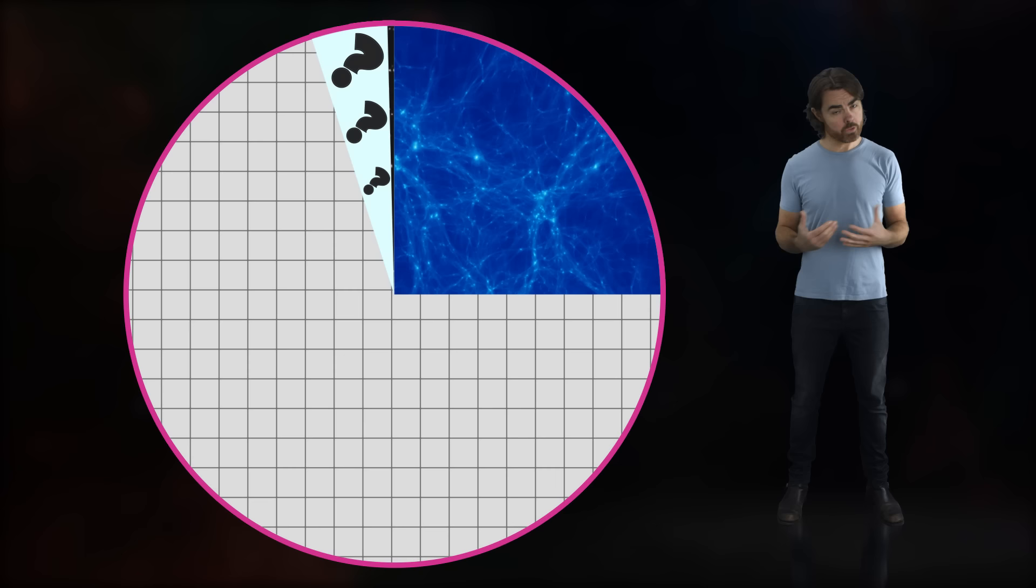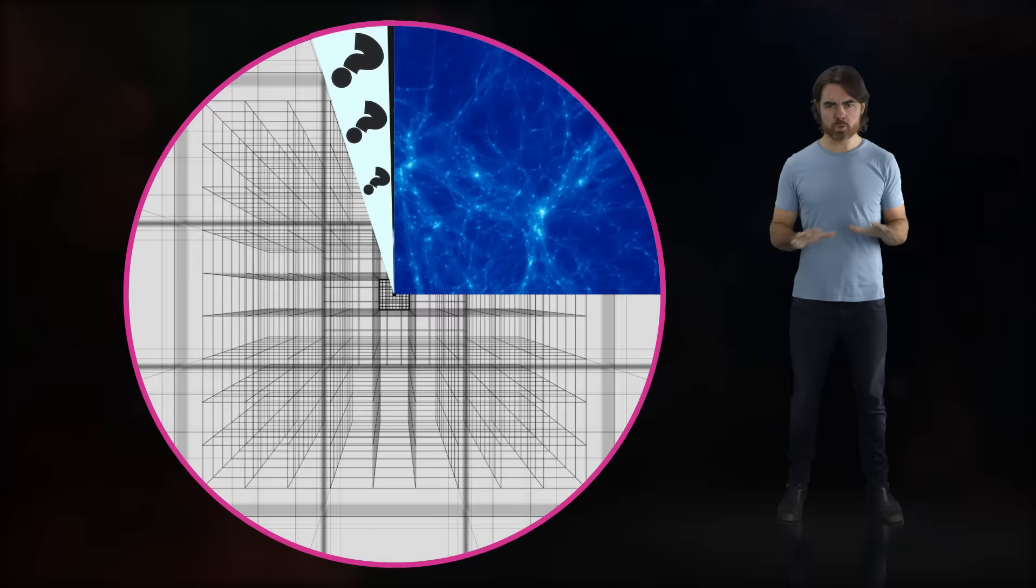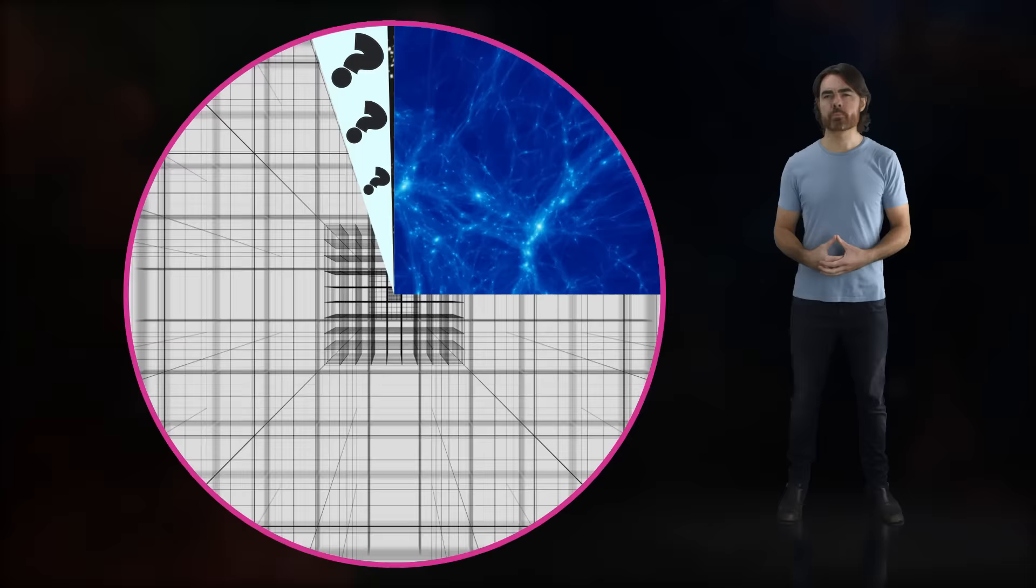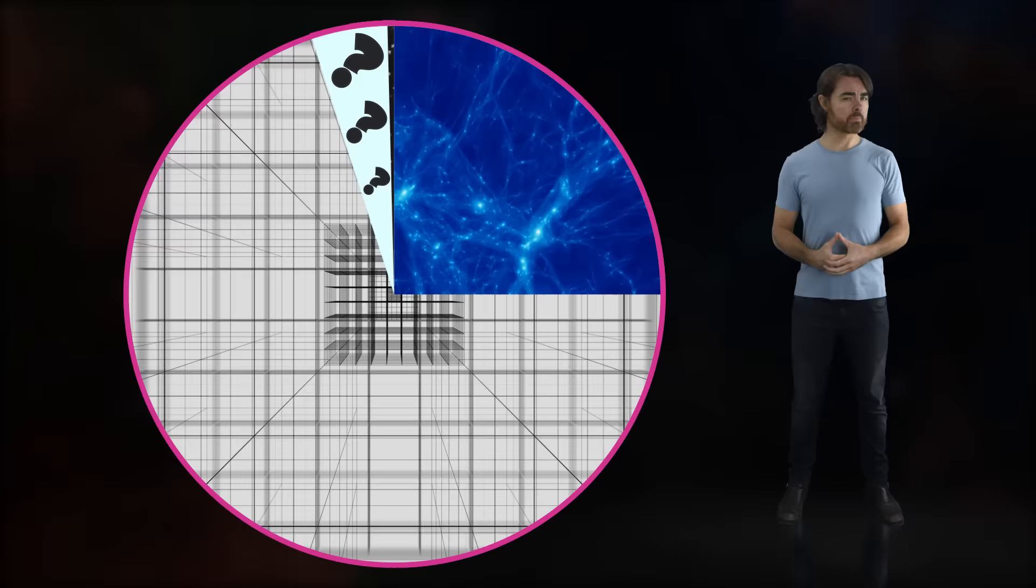Now, where dark matter pools, dark energy pushes. It causes the expansion of the universe to accelerate. This energy of the vacuum comprises 70% of the universe's energy content.